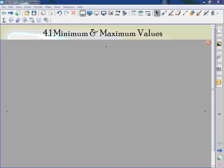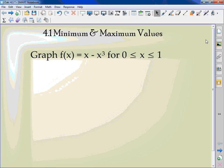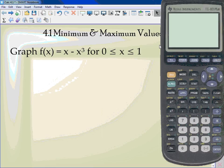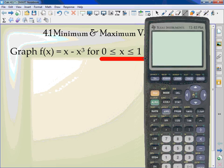Today we're starting 4.1 minimum and maximum values. We need our calculators. This is one important thing we need to be careful of. It's the 0 less than or equal to x less than or equal to 1. That is the only spot I am looking at on the graph.